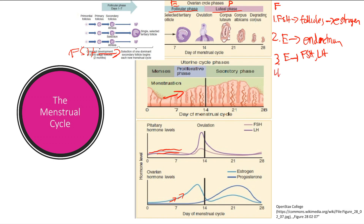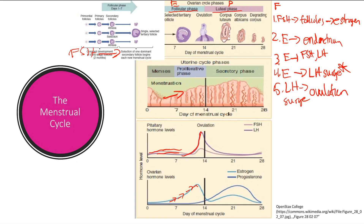Then your estrogen is going to go up and up and up until it reaches a certain threshold, where — for some reason which we don't know why — it's going to cause a sudden LH surge. This is a key moment: the estrogen gets high enough that it's going to induce LH to surge up. This LH surge is what causes our nicely matured follicle — which has been maturing thanks to FSH — to undergo ovulation and rupture. Our ruptured follicle will now become the corpus luteum, and thus ends the follicular phase.